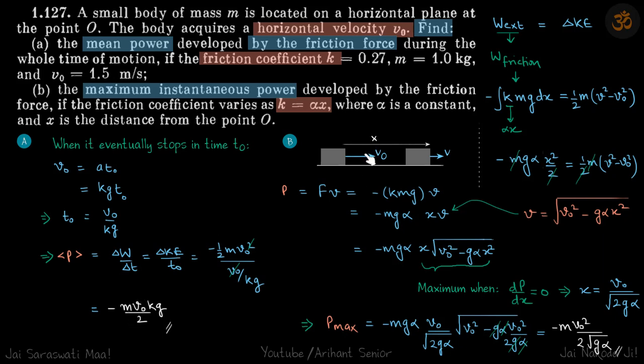In the second case, when it's at a distance x, the friction coefficient is αx. When its velocity is v at distance x, the power developed by the friction force is f·v, which equals minus kmg·v, and k is given as αx. So we have minus mgα times x times v.